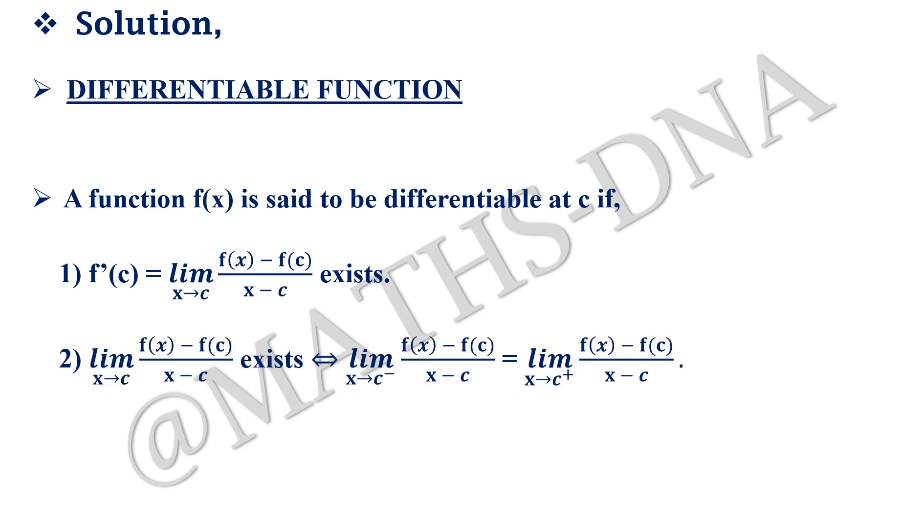And the second one, limit x tends to c, f(x) minus f(c) upon x minus c exists whenever left-hand limit, that is limit x tends to c minus, f(x) minus f(c) upon x minus c equals the right-hand limit, limit x tends to c plus, f(x) minus f(c) upon x minus c. So whenever the limit exists at a particular point, the function is differentiable.